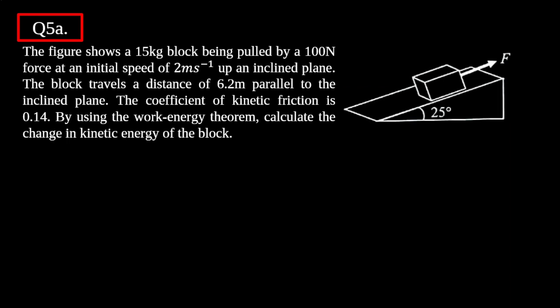Let's look at the first question. We have a block on an inclined plane. The figure shows a 15 kilogram block being pulled by a 100 newton force at an initial speed of 2 meters per second up an inclined plane. The block travels a distance of 6.2 meters parallel to the inclined plane. The coefficient of kinetic friction is 0.14.